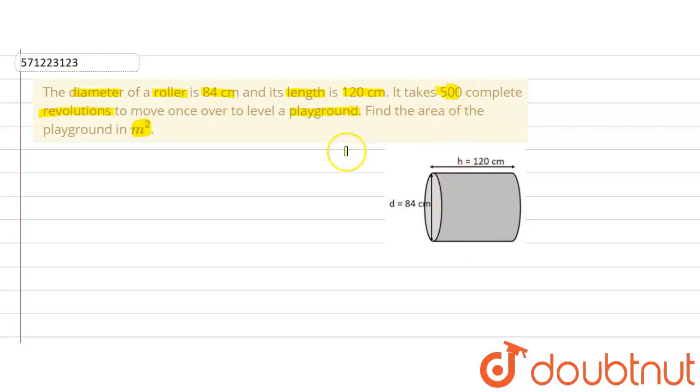It is given that there are 500 complete revolutions. That means the area of the playground will be equal to 500 revolutions multiplied by the curved surface area of this roller. First, we will find out the curved surface area.